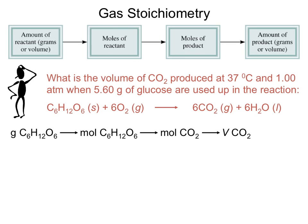Gas stoichiometry is very much like regular stoichiometry, except in this situation we're going to be utilizing the ideal gas law in order to interconvert between things like pressure, volume, and temperature, and the number of moles of your substance. PV = nRT is going to be basically the link between our moles and things like volume, pressure, and temperature.